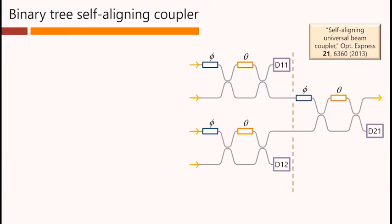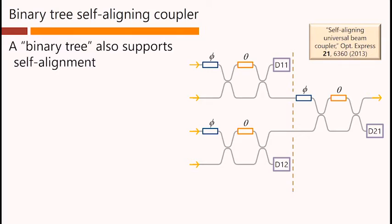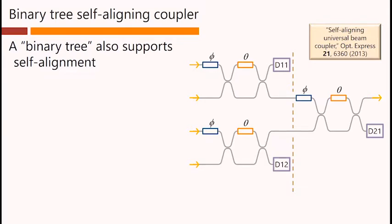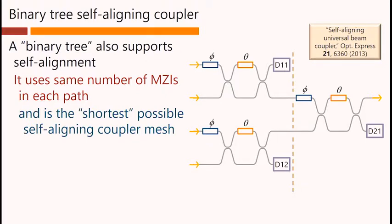In addition to the diagonal line, a binary tree of Mach-Zehnders, as shown here, also supports self-alignment. It uses the same number of Mach-Zehnders in each path, which can be a minor advantage. And it is also the shortest possible self-aligning coupler mesh.